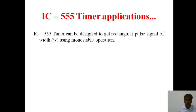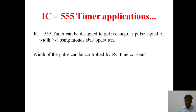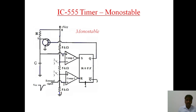What is a monostable multivibrator? It is a circuit which can generate a rectangular pulse signal of width W in monostable mode. The width of the rectangular pulse can be controlled by external R and C time constant. This is the circuit diagram for the 555 timer connected in monostable mode.